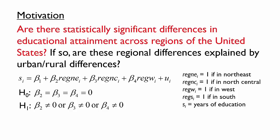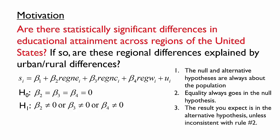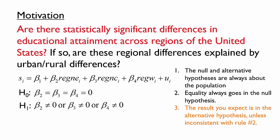It may be worth reminding ourselves of the three rules of writing hypotheses. These apply to hypotheses involving multiple parameters in the same way they apply to hypotheses about a single parameter. First, the null and alternative hypotheses are always about the population — we are making a statement about the parameters or the betas. Second, equality always goes in the null hypothesis. Finally, choose the null and alternative hypotheses so that the result you expect is in the alternative hypothesis, unless that would be inconsistent with rule number two. If the null hypothesis is false, then there are differences in educational attainment across regions, because the alternative hypothesis indicates that at least one region differs from the South.